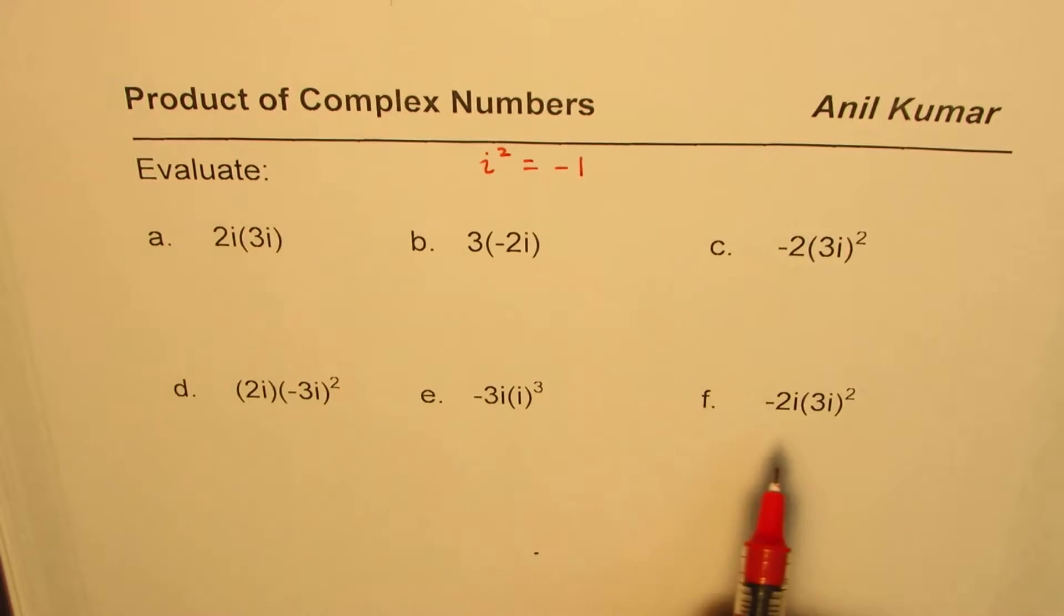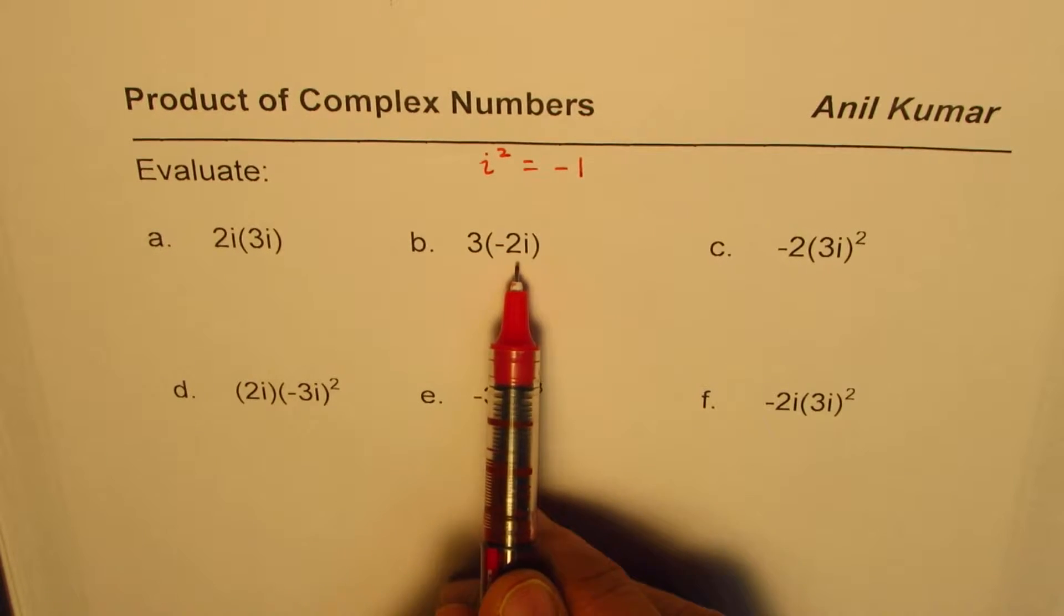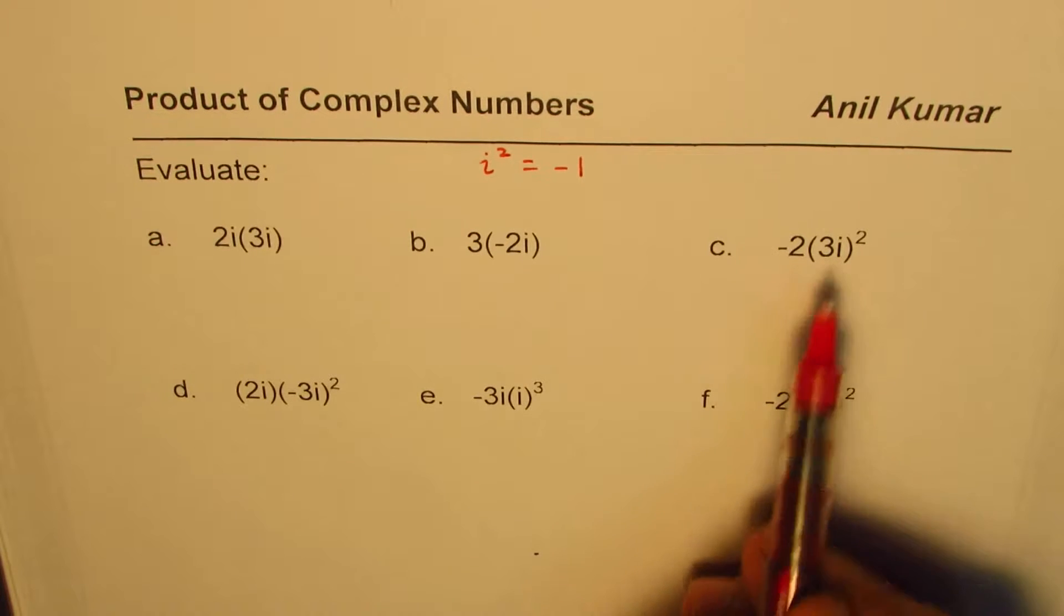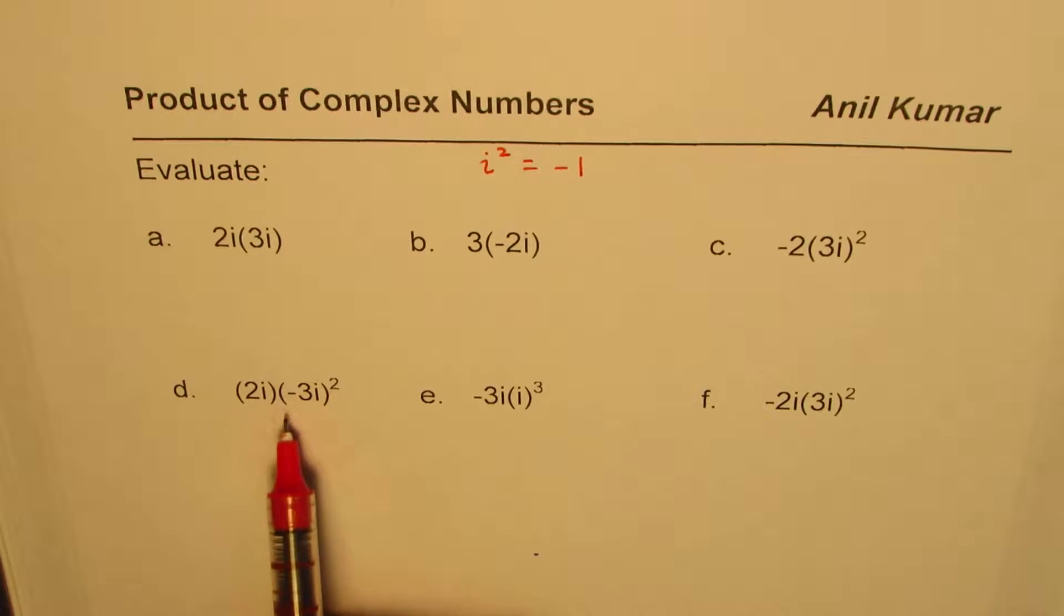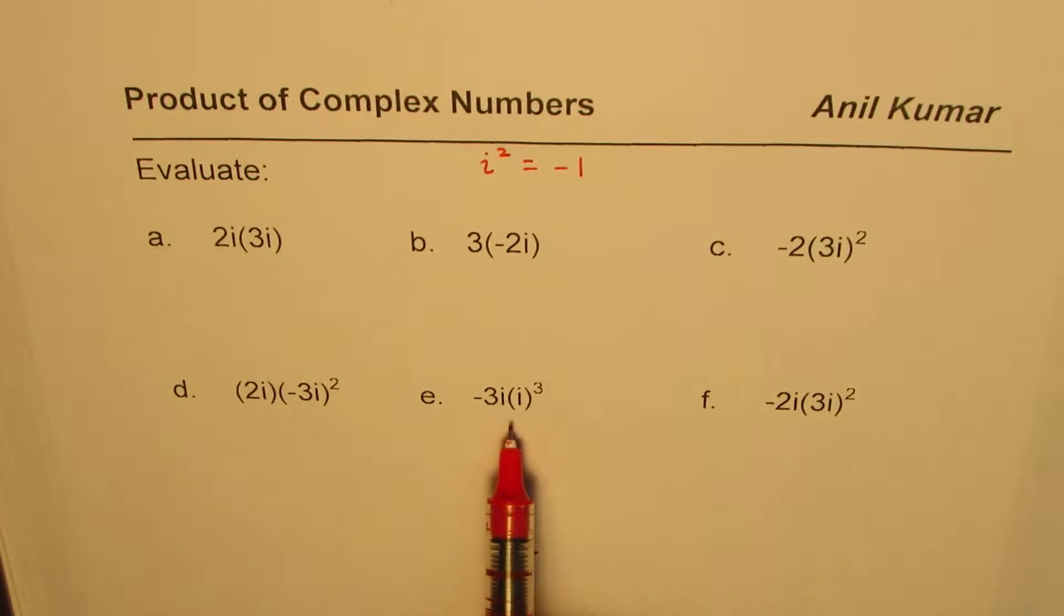We have 6 examples here. The first one is 2i times 3i, then 3 times -2i, -2 times (3i)², then 2i times (-3i)² which is slightly different from that, -3i times i³, and -2i times (3i)².